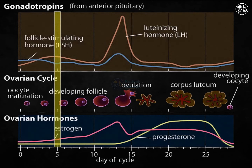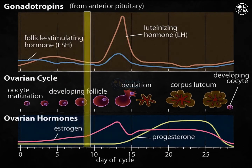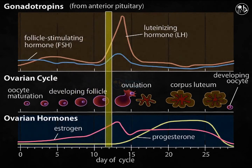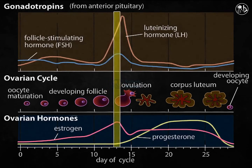Estrogen is secreted by the follicles as they expand. Increasing estrogen levels in the pituitary restrict the release of more FSH and LH during this period, so levels of FSH and LH decline throughout the next week. Beginning at approximately day 12, rising estrogen levels have an unexpected effect on the pituitary gland. Rather than providing negative feedback, these hormones now provide positive feedback, prompting the pituitary to generate enormous levels of FSH and LH.